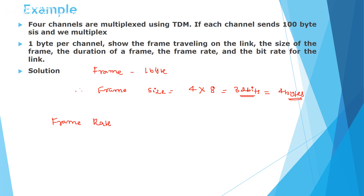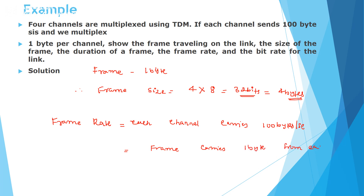Now we can compute frame rate. Frame rate equals the number of bytes each individual channel carries per second. Since each channel carries 100 bytes per second and each frame carries one byte from each channel, the frame rate is equal to 100 frames per second.